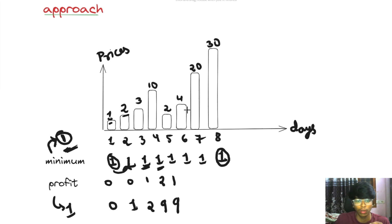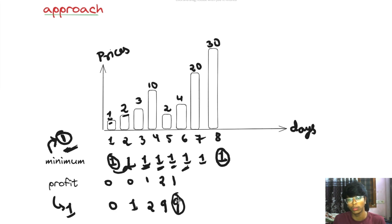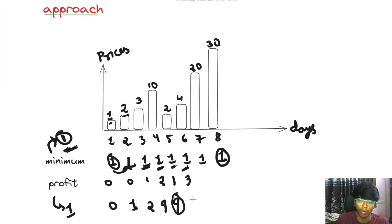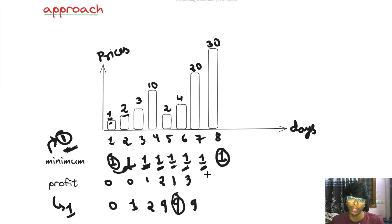Next value is 4. Minimum is still 1. 4 minus 1 equals 3, which is less than 9, so profit remains 9. Next value is 20. Minimum is 1. 20 minus 1 equals 19, which is greater than 9. So profit is updated to 19.